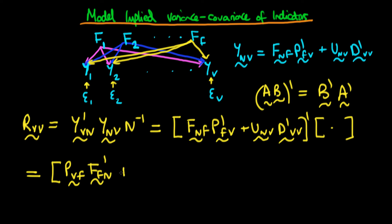And then what we get is we get d_vv times u_vn all primed. So I'm just going to rewrite this second parenthesis here, so it's just easy to see what's going on when we expand it.